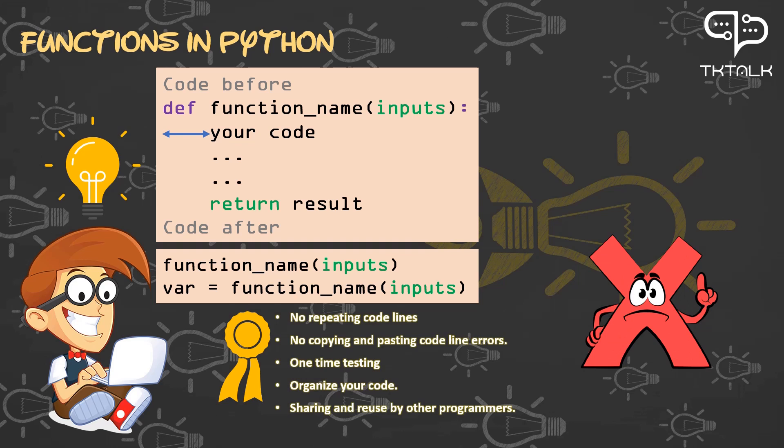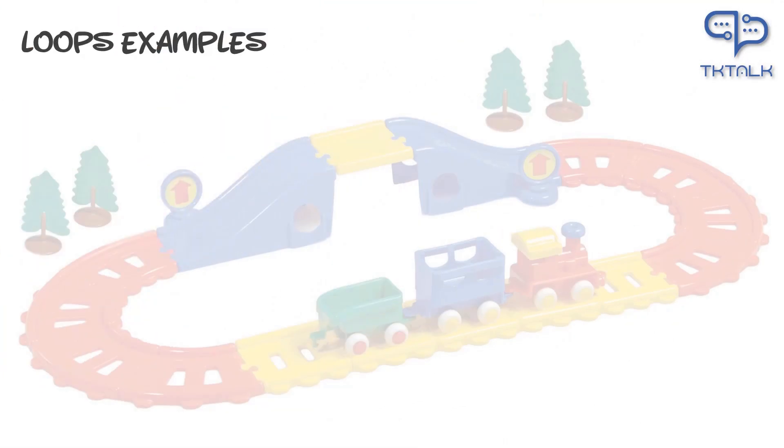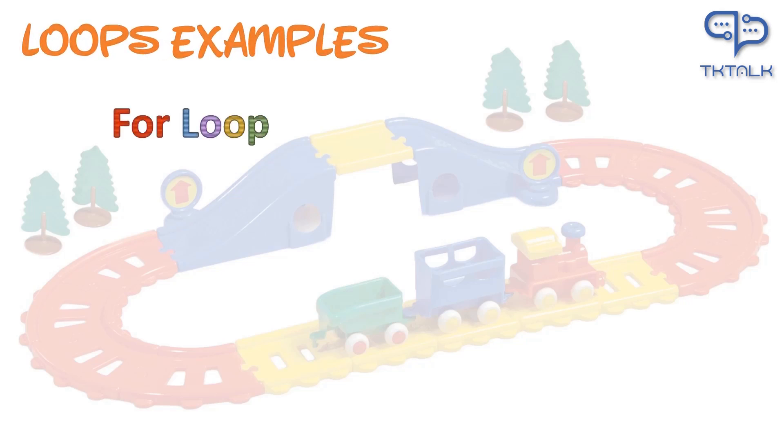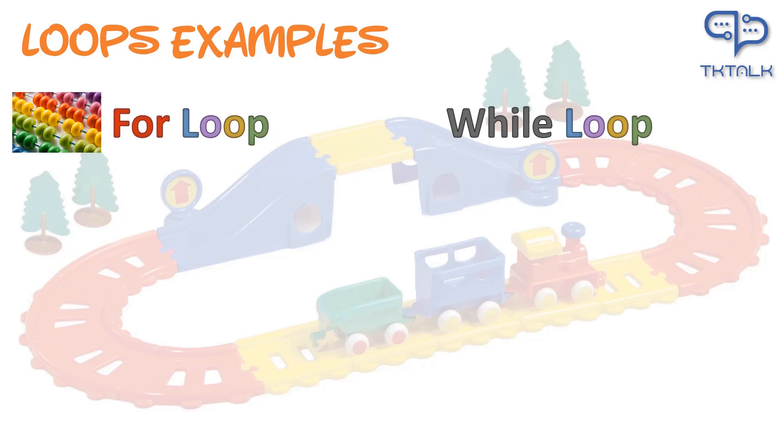However, functions don't resolve another issue of repeating code precision times, or till certain actions. This is called loops. Let's see what loops mean. Repeat something in programming is called loop. Loops mainly have two types: either for loops that depend on count or number of repetitions, or while loops that repeat itself to a condition or event to stop it.